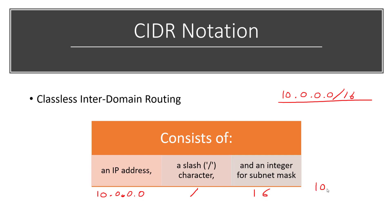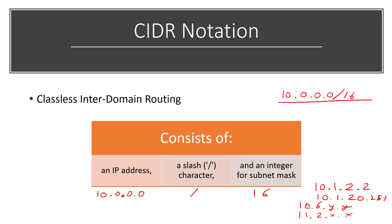So if I write an IP address 10.1.2.2, it belongs to network 10.1. Similarly, 10.1.20.251 also belongs to the same first network, because the network is only identified by the first two octets. Whereas 11.2.x.x is a different network entirely, and 10.6.y.y is also a different network entirely. To identify the network we look at the first two octets; to identify the host, we look at the last two octets.